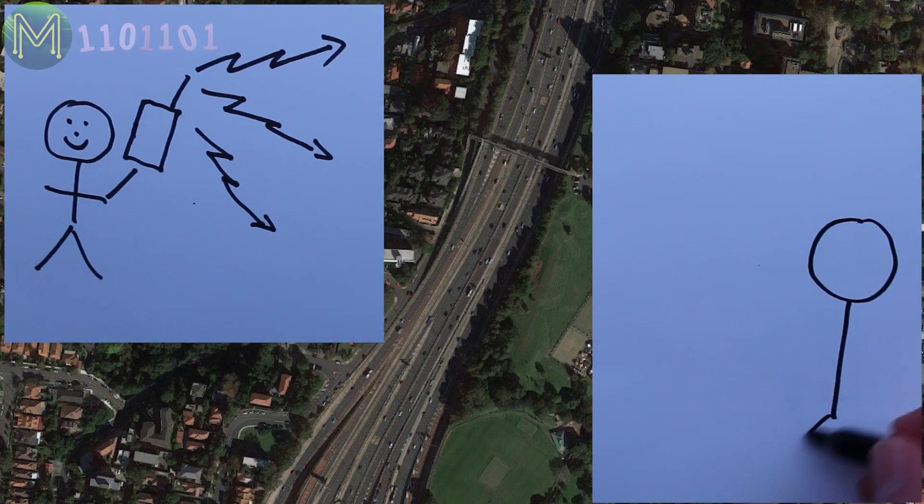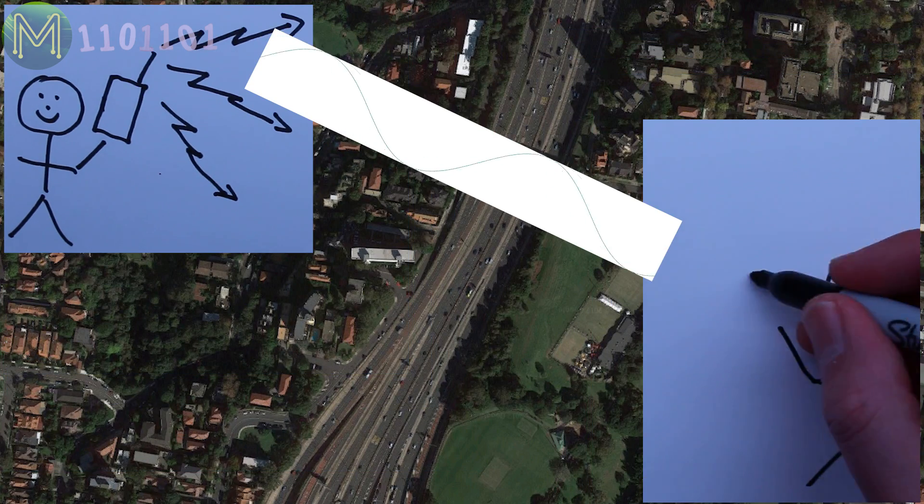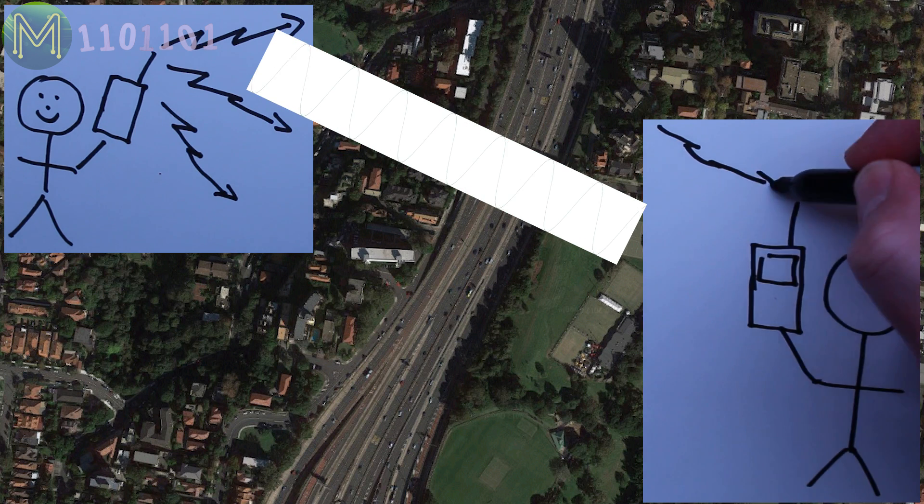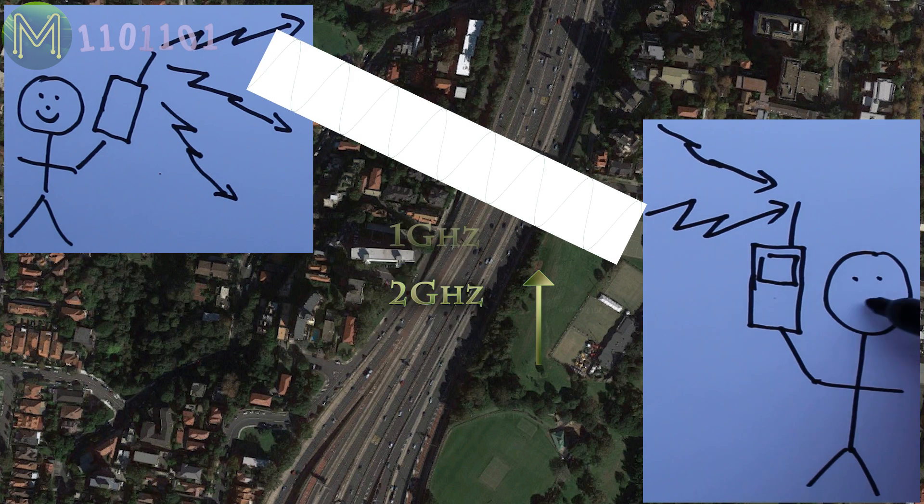Two: the higher the bandwidth, or the amount of data you want to send, the higher the transmitter frequency.